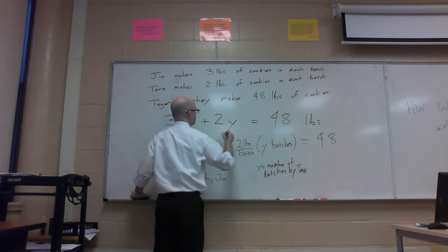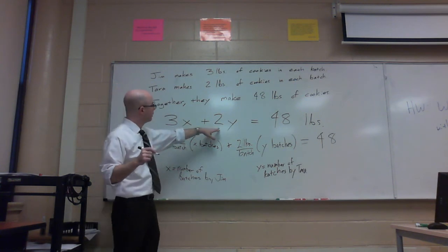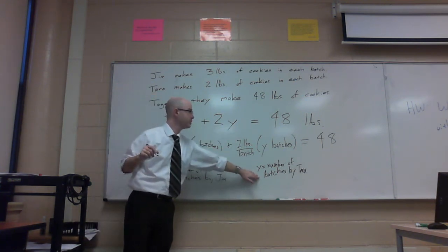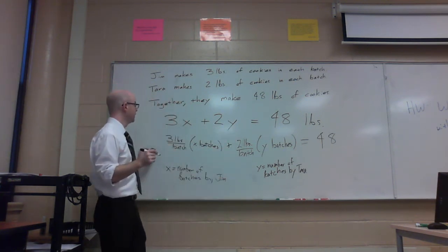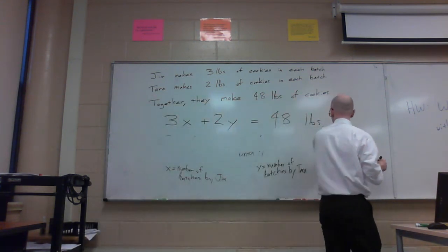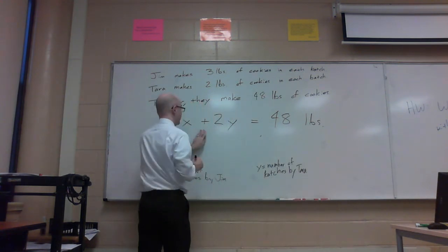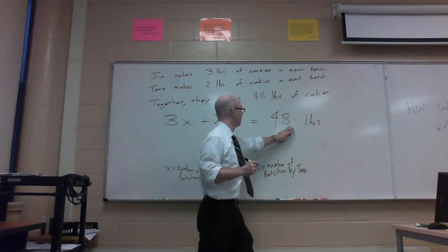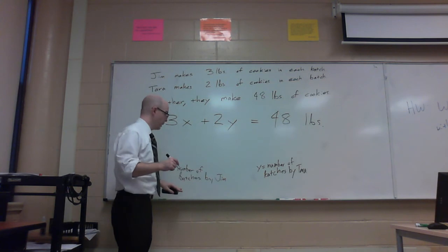So 3 times x, where x is still the number of batches by Jim. Similarly 2y, where y is still the number of batches made by Tara. It looks a lot cleaner.